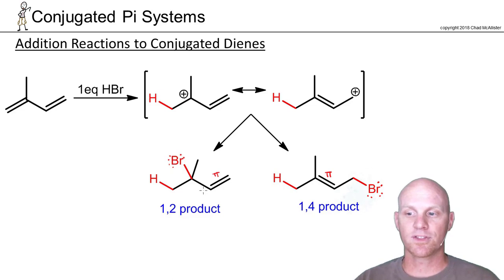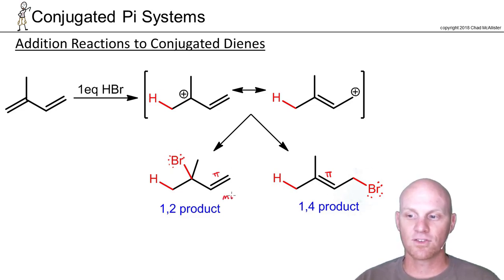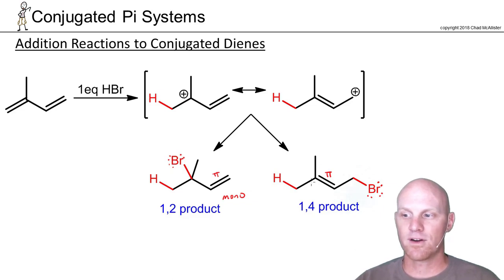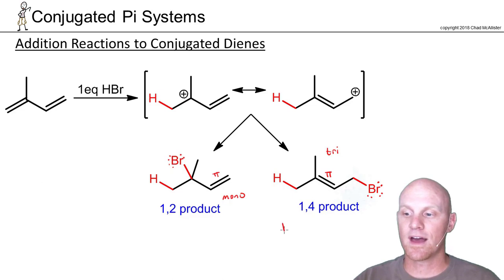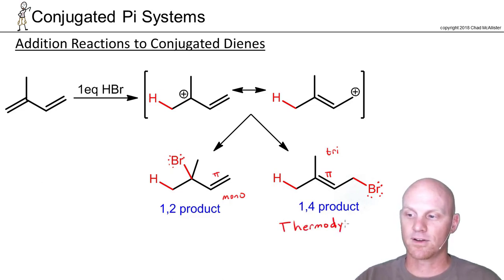Looking at the 1,2-product: its alkene is bonded to two hydrogens, a third hydrogen, and one carbon — that's monosubstituted. The 1,4-product's alkene has carbons at three out of four positions and one hydrogen — that's trisubstituted. So the 1,4-product is the more stable product, and we call that the thermodynamic product.